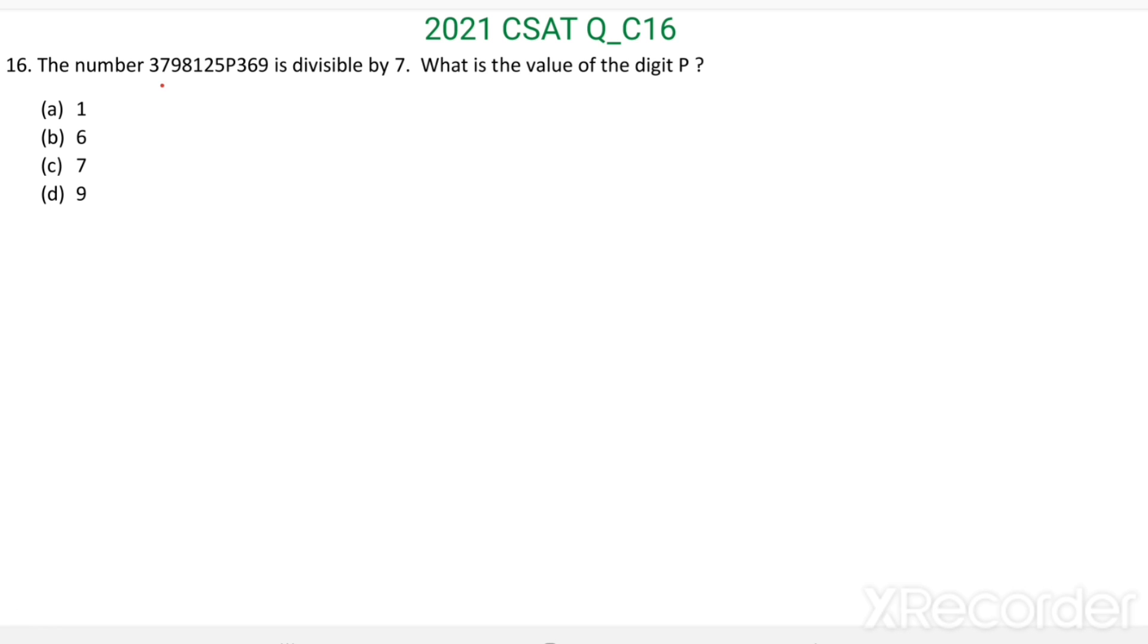This number is divisible by 7. That means this number is exactly divisible by 7. When we divide this number by 7, we get remainder equal to 0. Then what is the value of digit P? We have to find the value of this digit P.